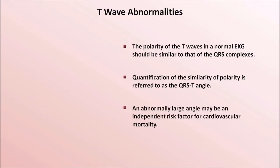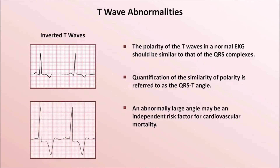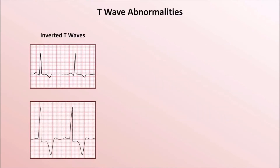There are a number of different abnormalities of the T wave. First, they can be inverted, which may be relatively minor or can be very pronounced. Since T waves should have a similar polarity as the QRS complexes, it can be predicted in which leads T wave inversions may be normal.